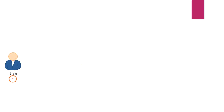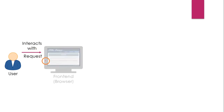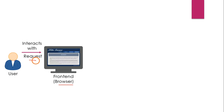First, there is a user — you can assume this is yourself. The user is interacting with the front-end, that is the browser, by sending a request. The request can be simply opening the browser and typing www.google.com or www.youtube.com. You are requesting a page which belongs to a particular domain, either google.com or yahoo.com or any other website.